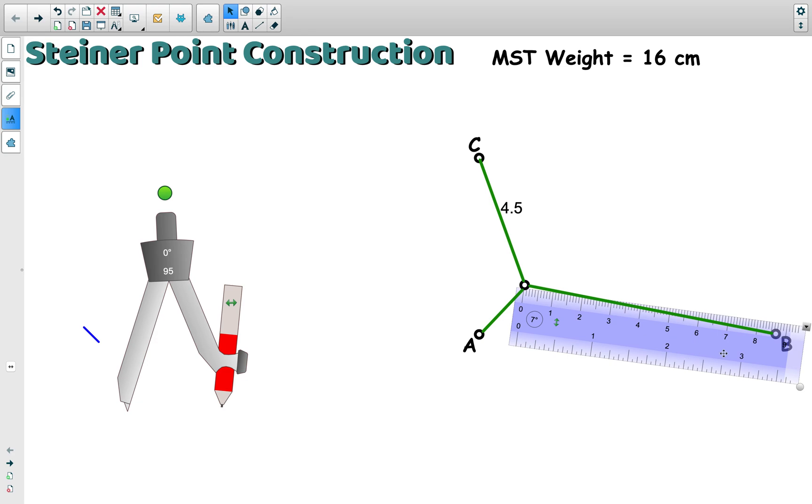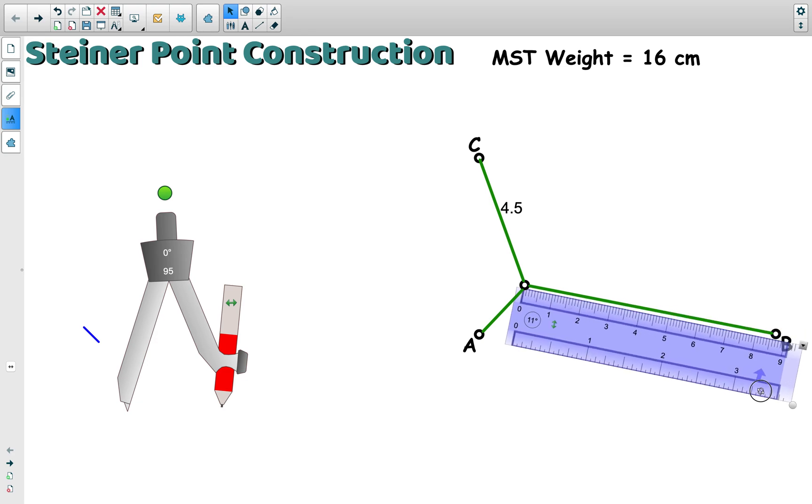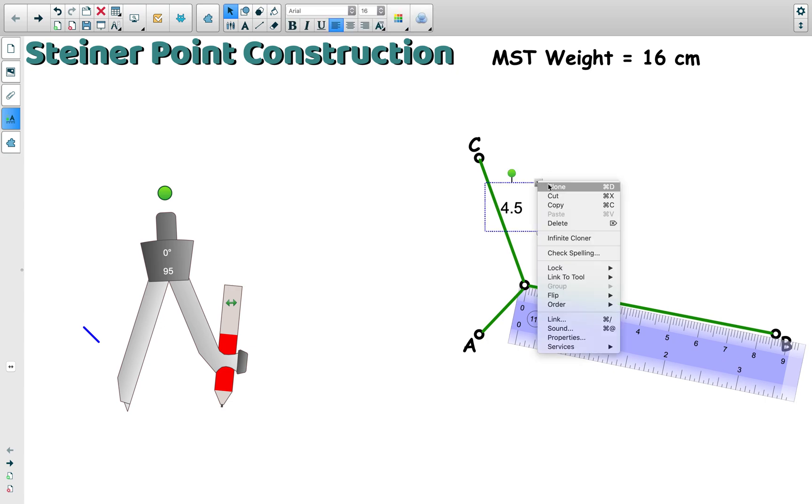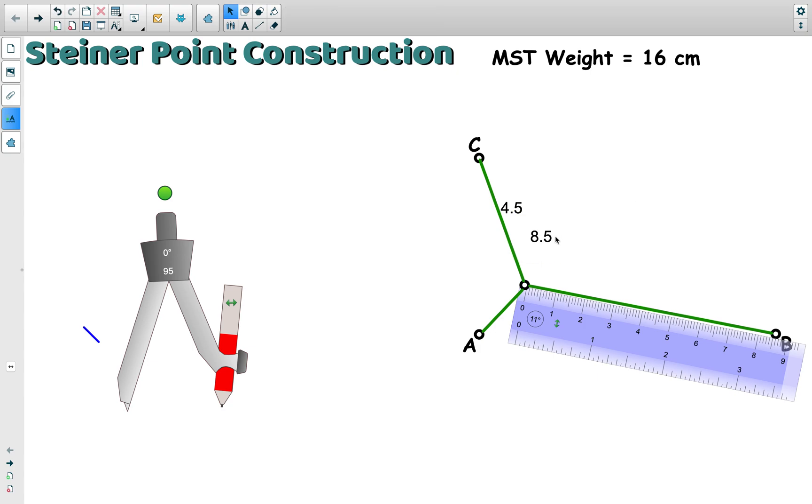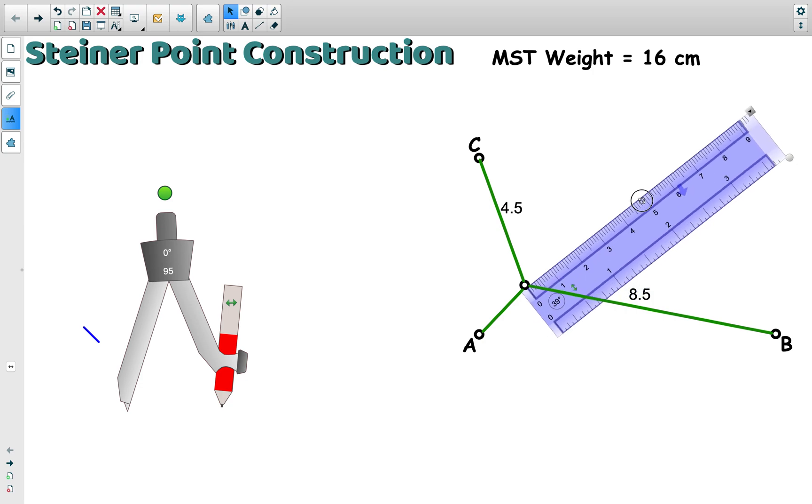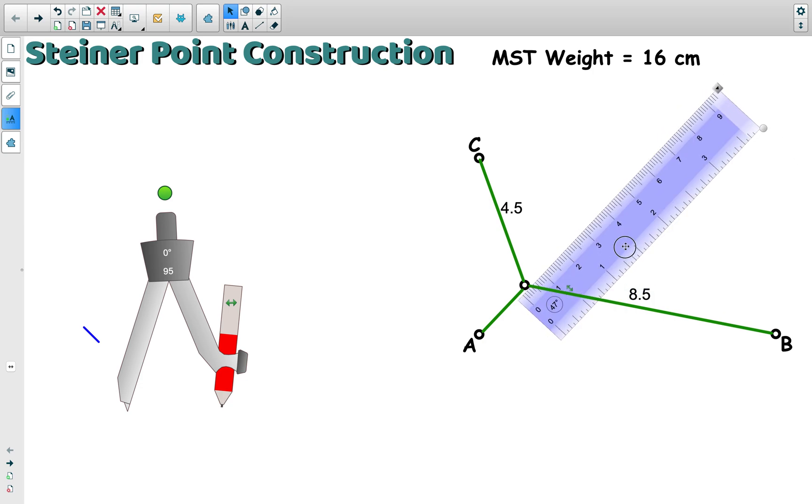From our Steiner point to point B is about 8.5, and our Steiner point to A is about 2.2.